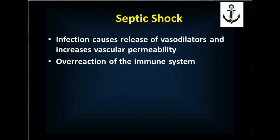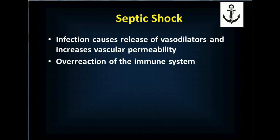In septic shock, you have an infection, and like anaphylaxis, the body responds — appropriately — but may have an excessive response called systemic inflammatory response syndrome (SIRS). Blood vessels dilate and become leaky so the immune system can fight the infection everywhere. With a systemic infection, this response is body-wide, causing shock from volume loss and vascular dilation. Depending on toxins released, you can also develop heart failure and respiratory failure, making it multifactorial.